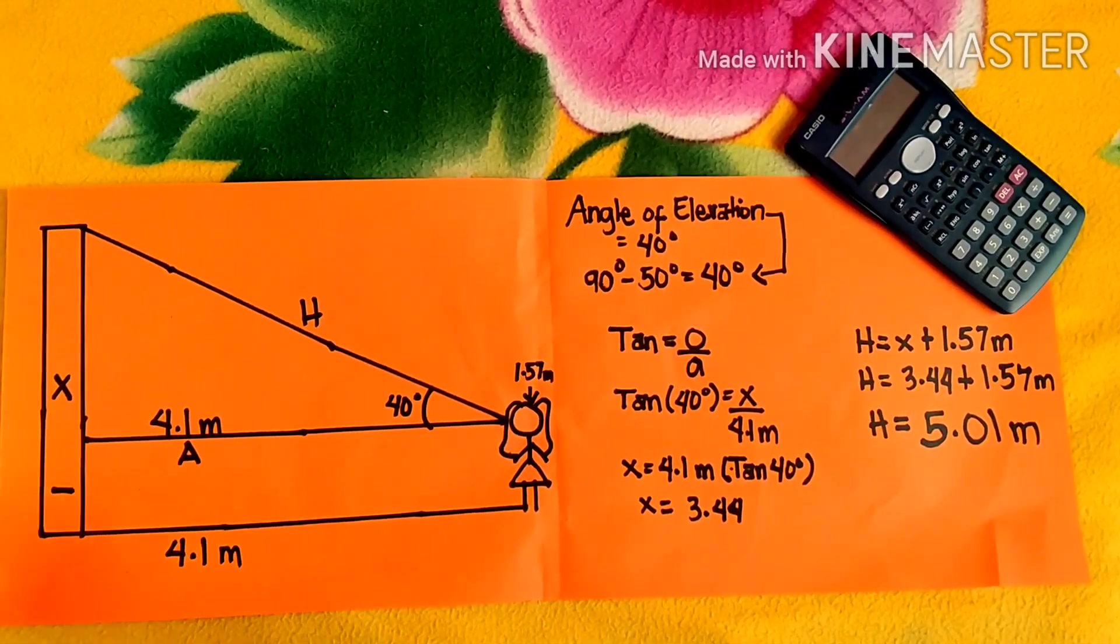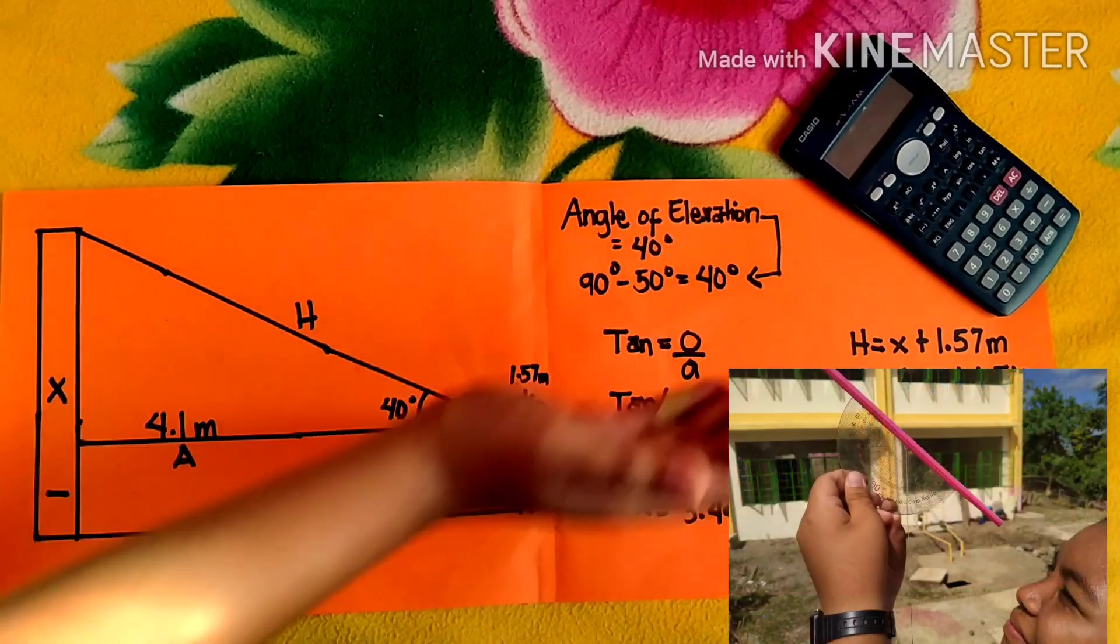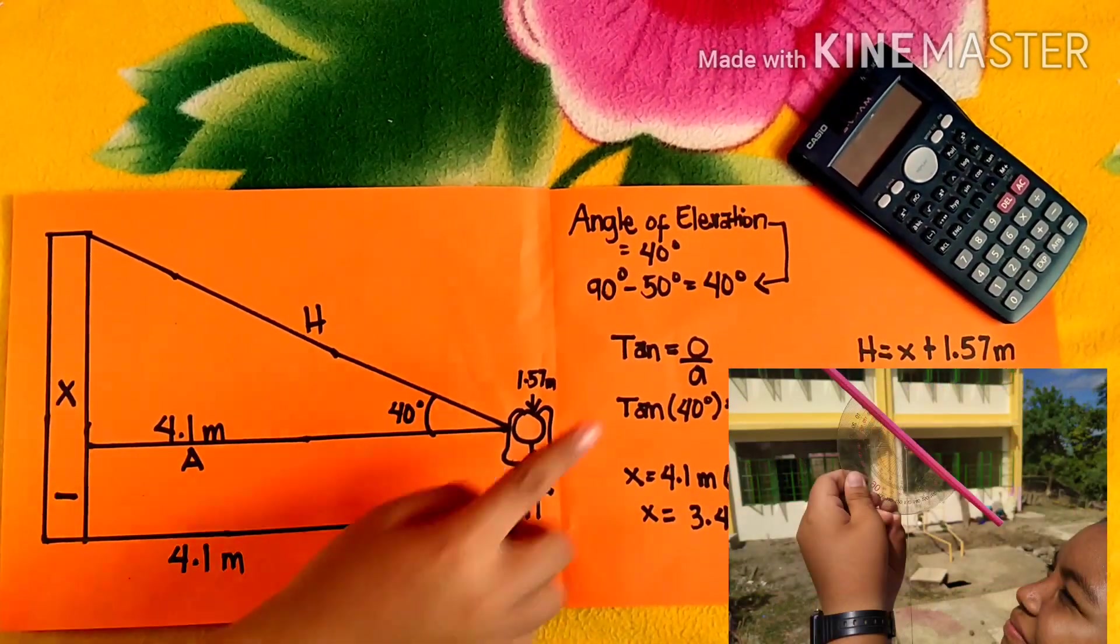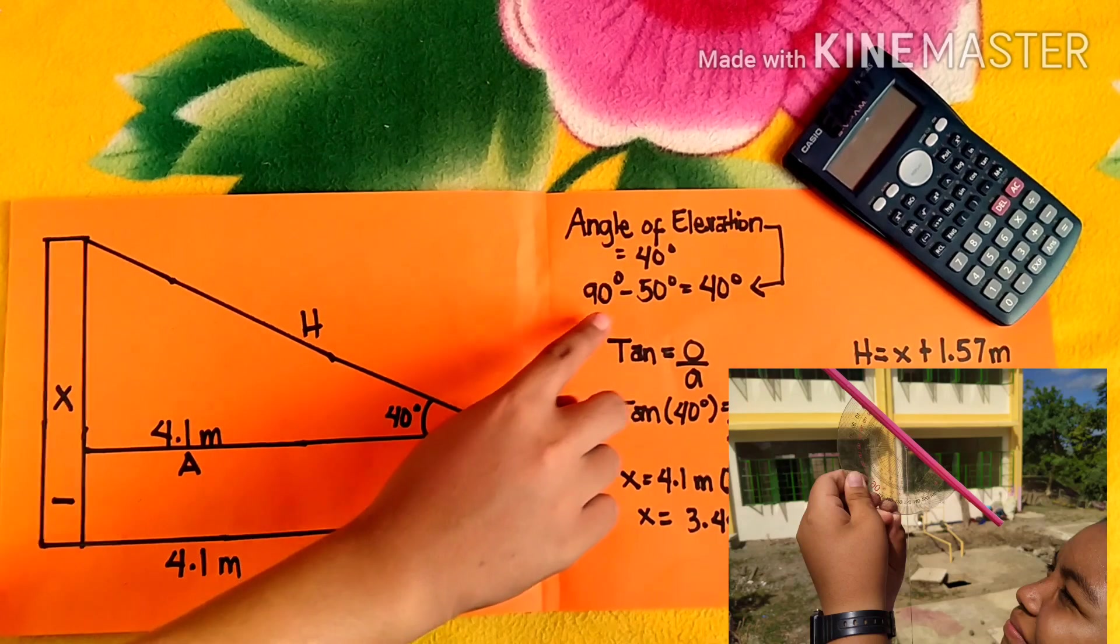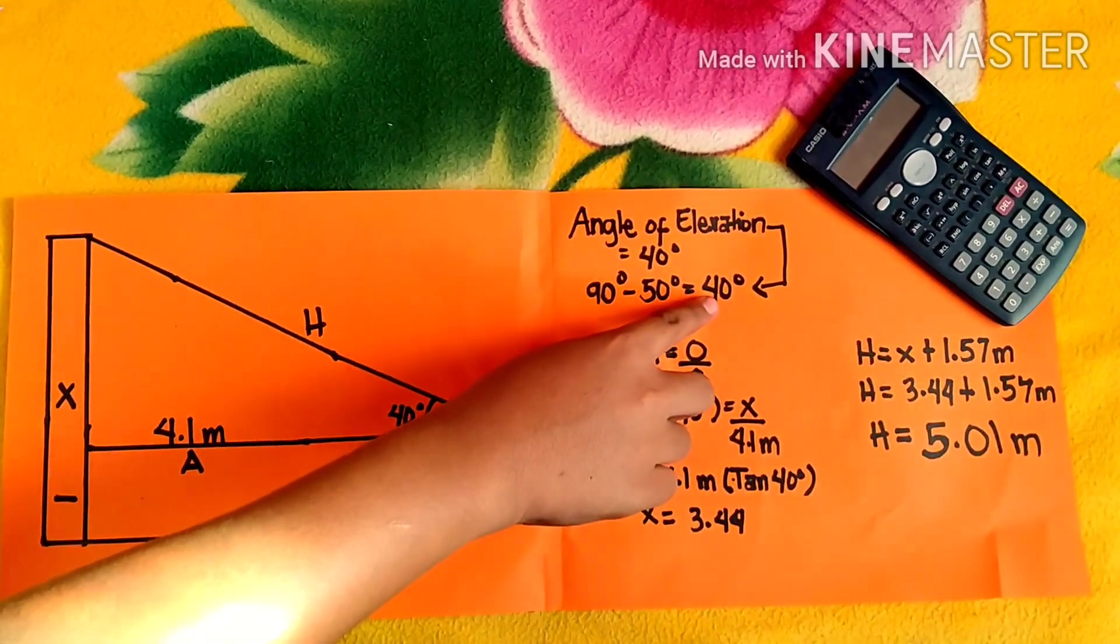To get the angle of elevation, get the angle based on what's showing in the protractor, 50 degrees, and subtract it from 90 degrees. So our angle of elevation is 40 degrees.